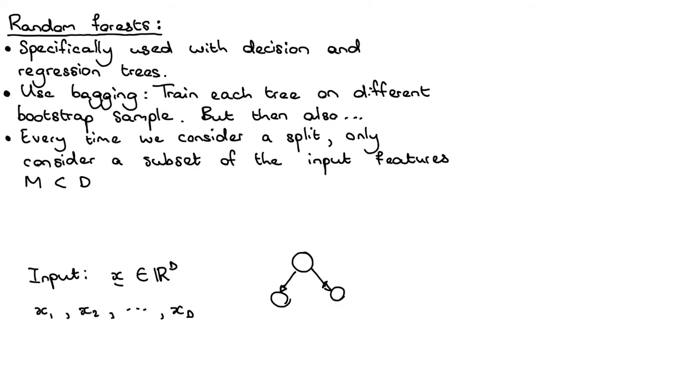So I could decide I'm not going to look at x2 and I'm not going to look at xd. I'll only look at m other features in my list of features, and then when I decide how I should split here, I'm only considering those features.